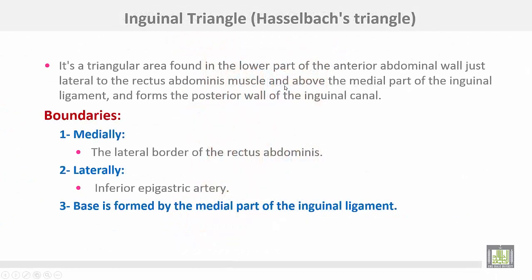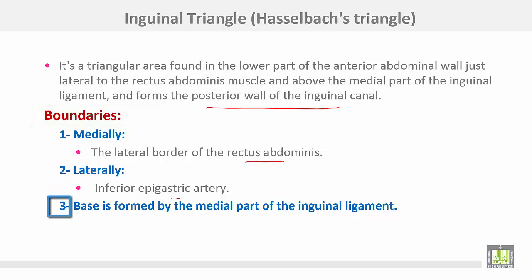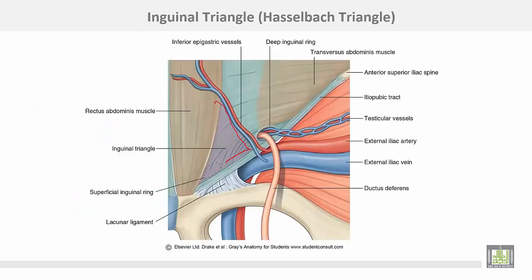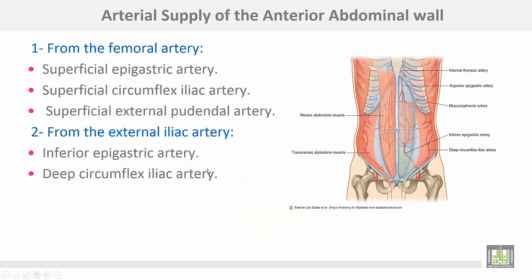The inguinal triangle, or Hesselbach's triangle, is a triangular area found in the lower part of the anterior abdominal wall, just lateral to the rectus abdominis muscle and above the medial part of the inguinal ligament, forming the posterior wall of the inguinal canal. Its boundaries are: medially the lateral border of the rectus abdominis muscle, laterally the inferior epigastric artery, and the base is formed by the medial part of the inguinal ligament.